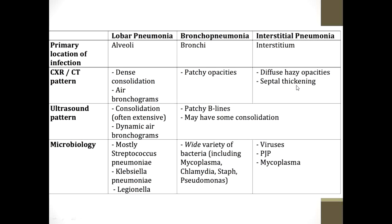In interstitial pneumonia, chest X-ray shows diffuse hazy opacities and septal thickening. On ultrasound, lobar pneumonia shows extensive consolidation and sometimes parapneumonic effusion. Bronchopneumonia on ultrasound shows patchy B-lines with possible consolidation. Regarding microbiology: lobar pneumonia is most commonly caused by Streptococcus pneumoniae, though Legionella can also give a lobar appearance. Bronchopneumonia is caused by atypical organisms like Mycoplasma, Chlamydia, Pseudomonas, and sometimes Staph aureus.